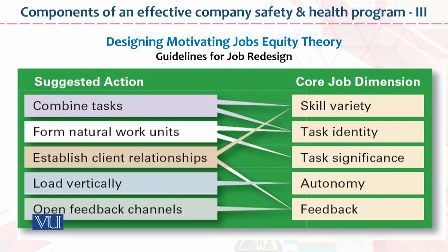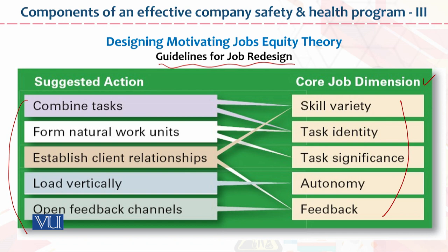Designing motivating job equity theory — ager dekha jaiye to ismein guidelines for job redesign hain. Skill variety ka link: establishing client relationship. Iska link: combine task. Task identity: form natural work unit. Task significance ke saath load variety ka taluq. Autonomy ke saath open feedback ka taluq. Feedback ke saath — yeh core job dimensions hain. Aur yeh paanch suggested actions hain. Jab yeh kaam karenge to yeh cheezain payda hongi — yeh basically guidelines hain for job redesign.